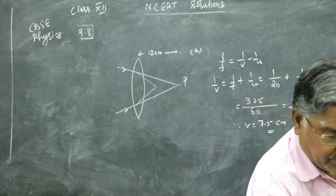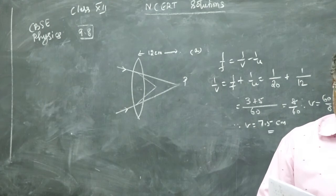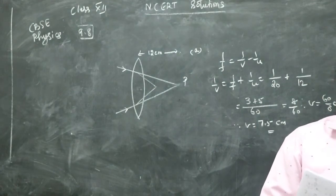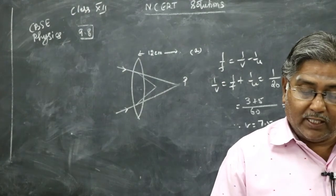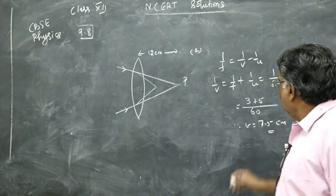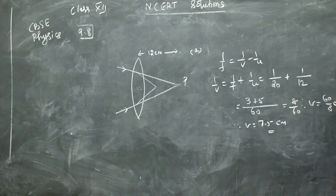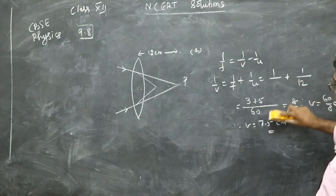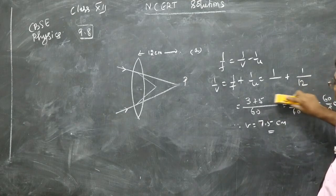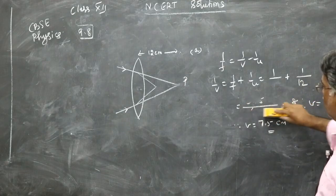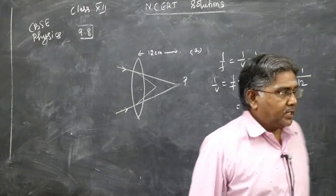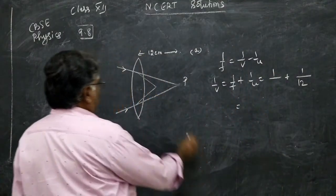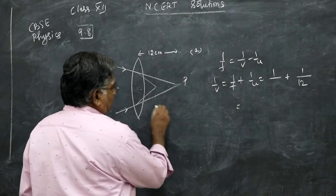The second part: same P, 12 also is same, but instead of convex lens you put concave lens of focal length 16 centimeter. So now this is to be taken as 16, this will remain 12. But you see here, this is concave lens of focal length 16. Same thing but instead of convex, you are now putting a concave lens.